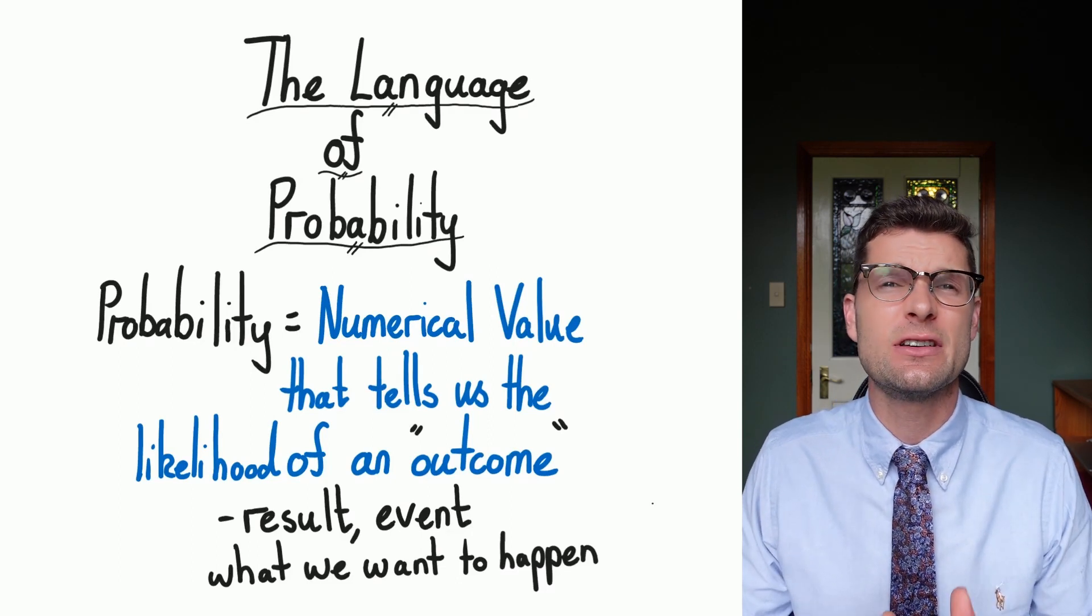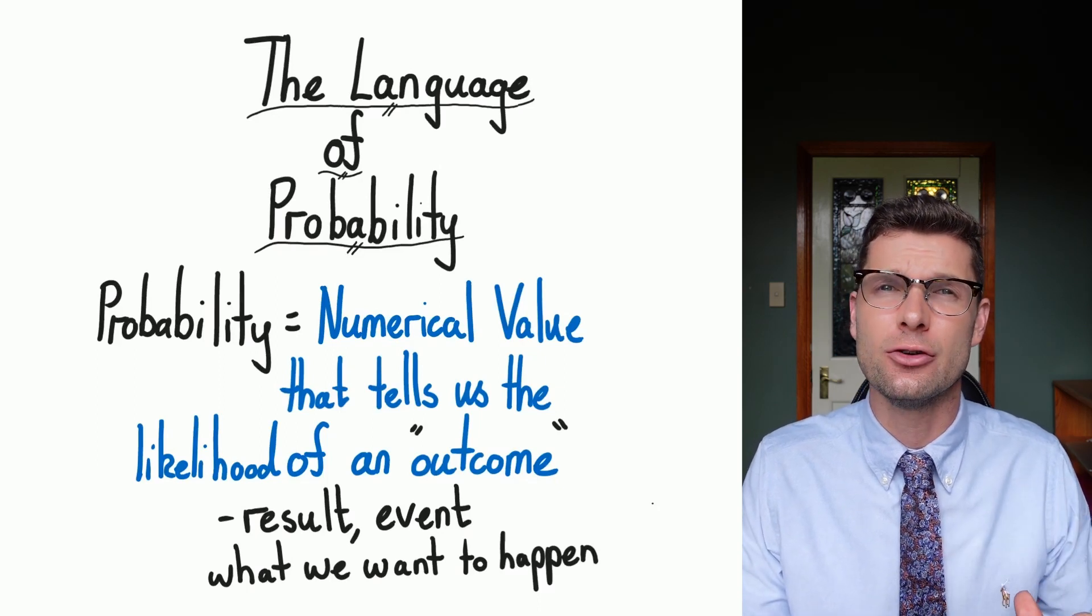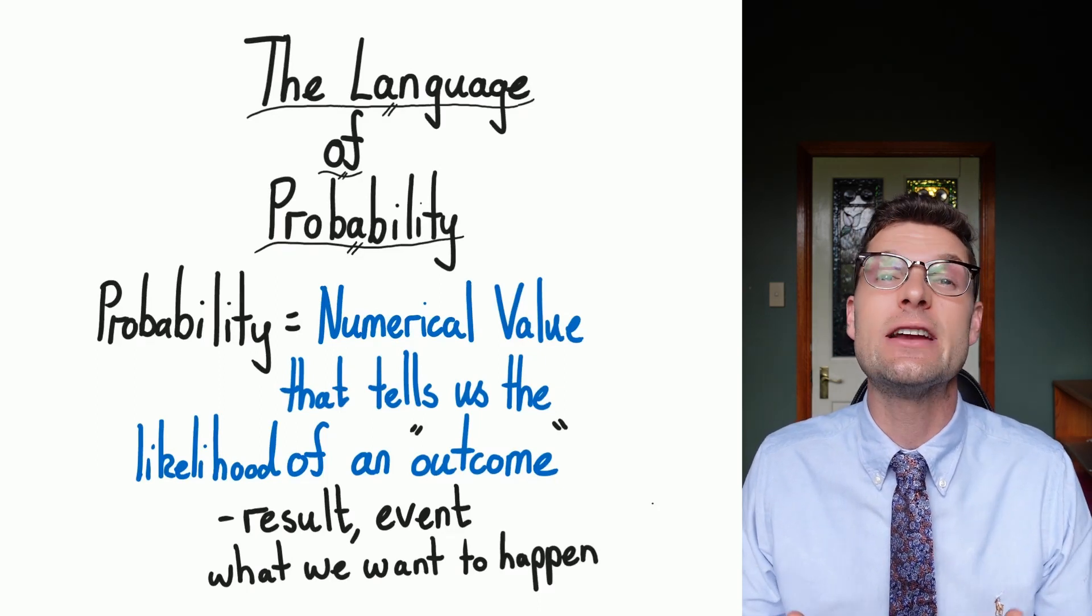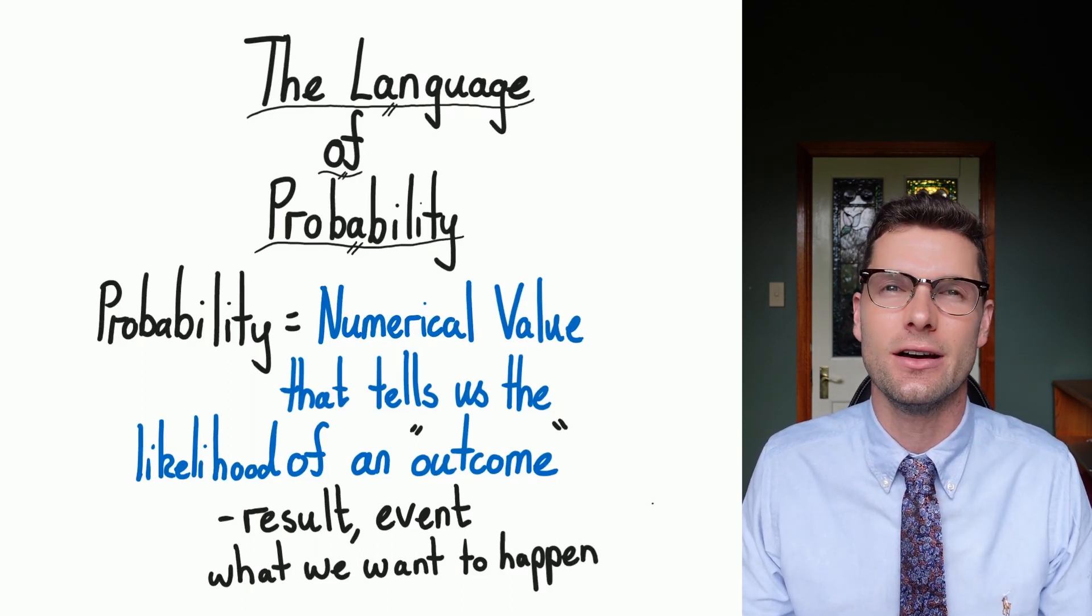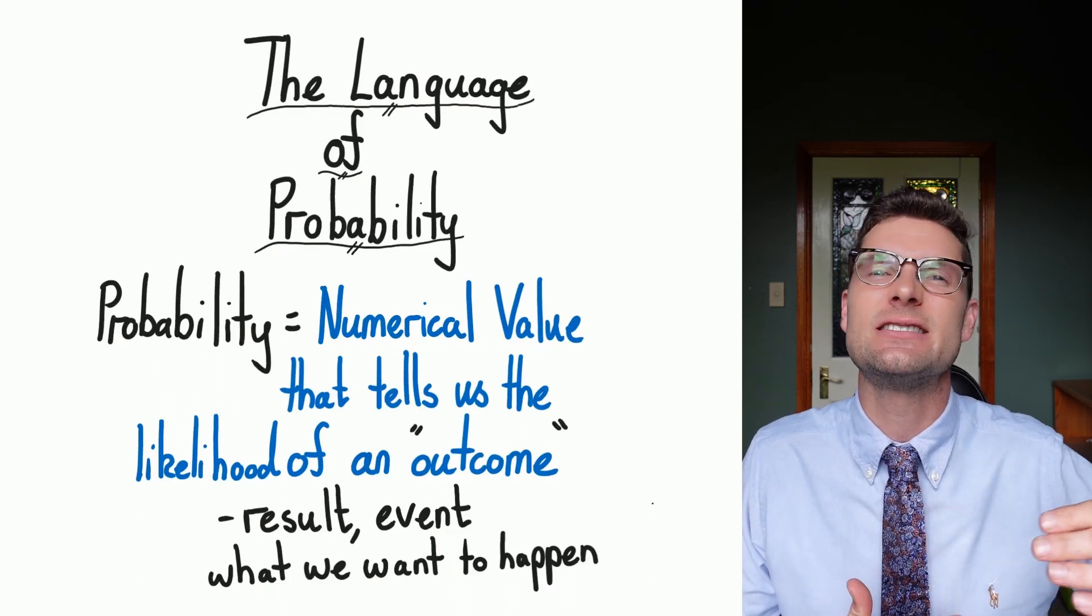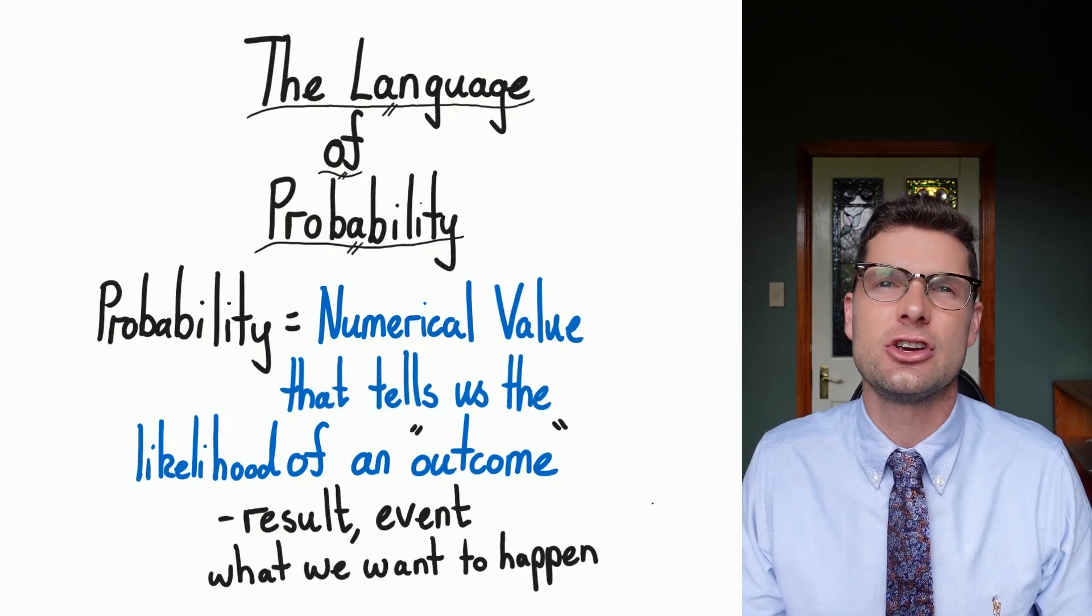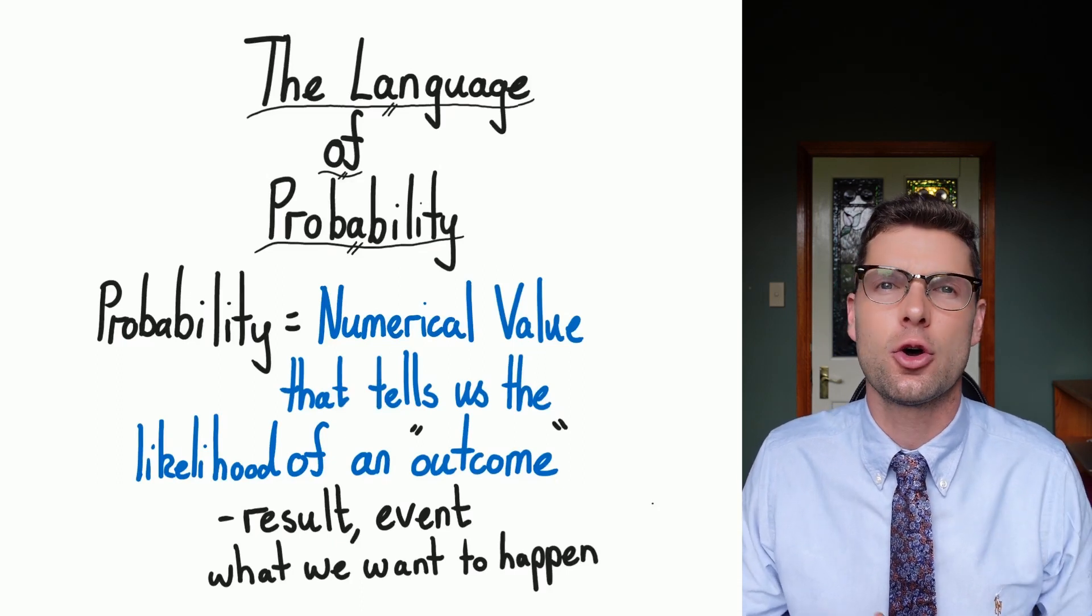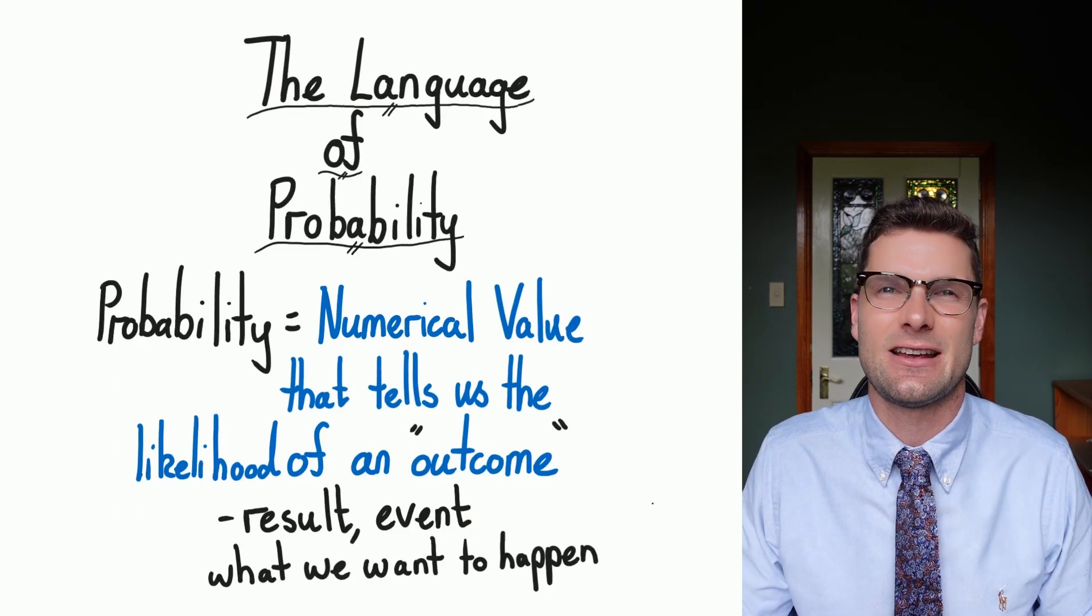The most important thing that we need to know is that probability is assigning a numerical value to something happening, to a chance or the likelihood of an event occurring in the future. The word here that's really important for us is outcome. So this is what happens at the end of an experiment or a game. Other words you could look at are things like result or event or even just what we want to happen after something occurs.